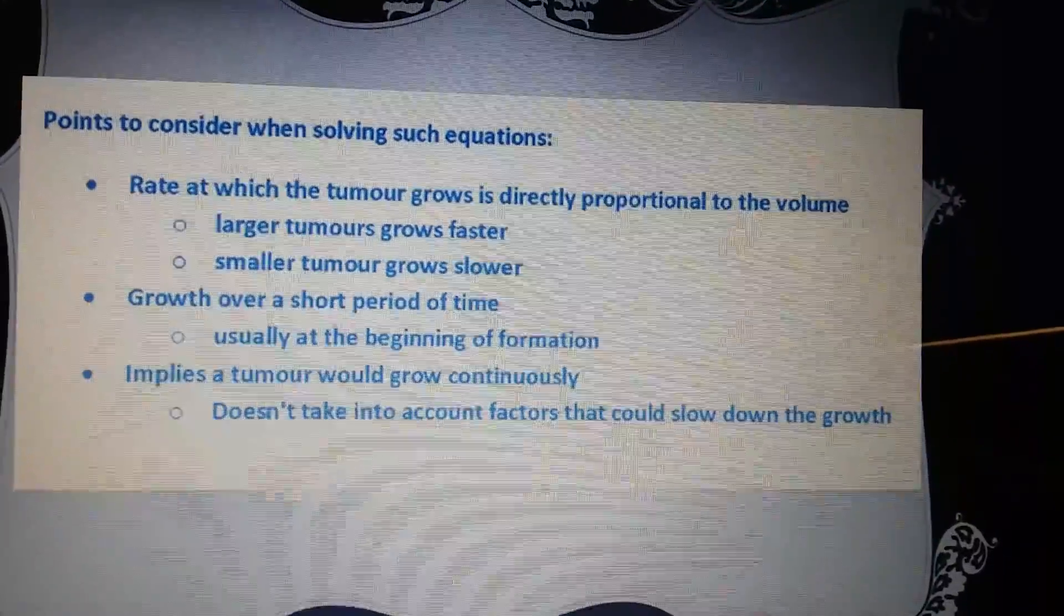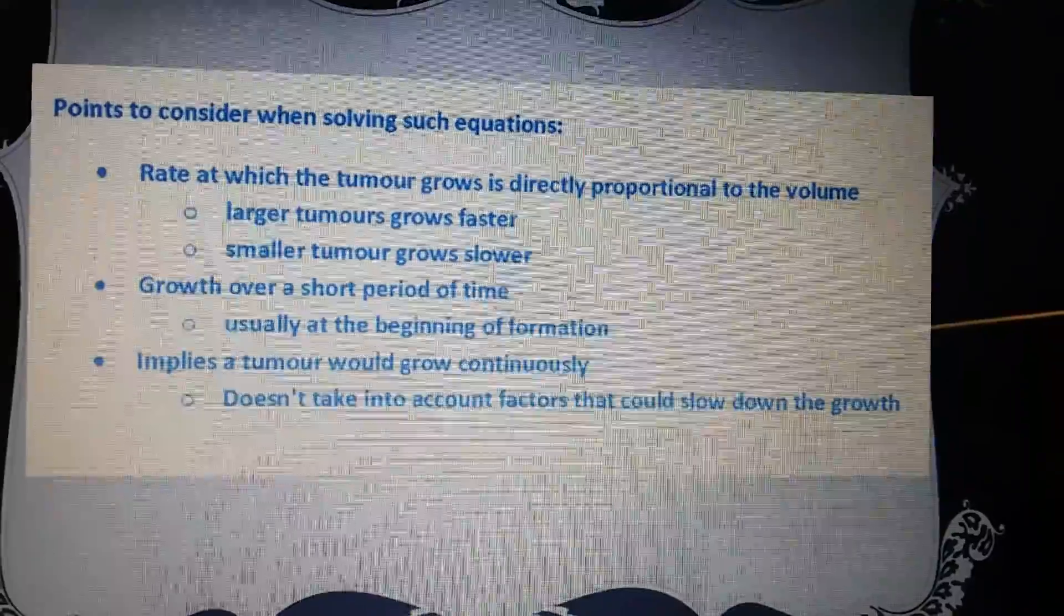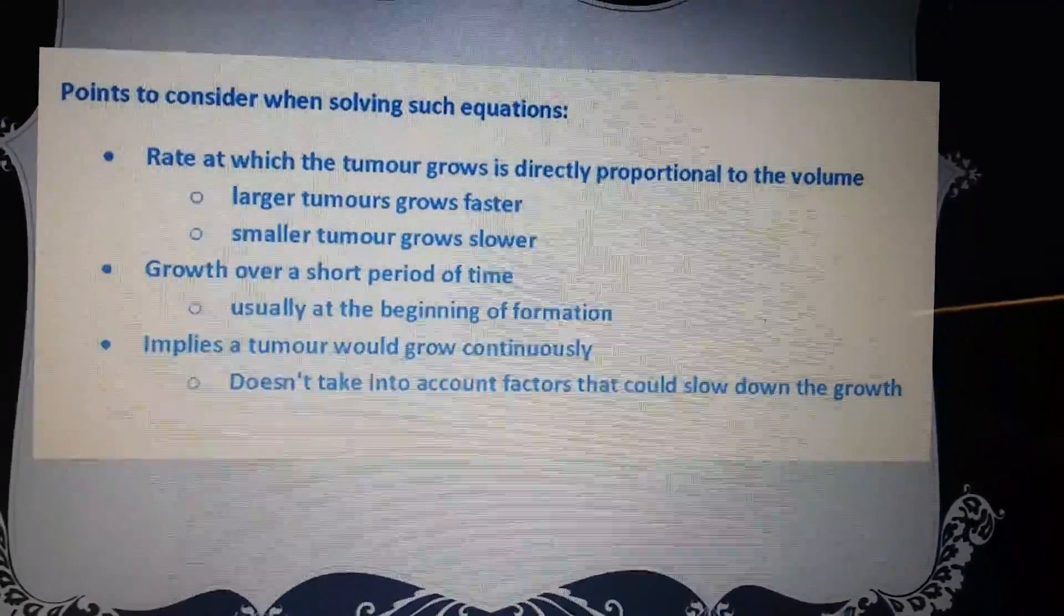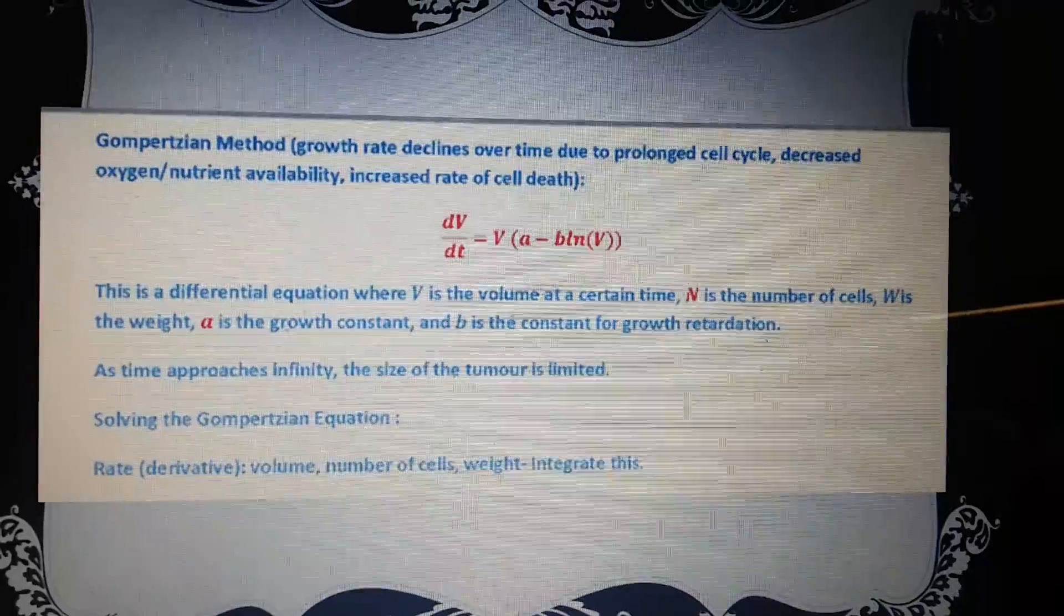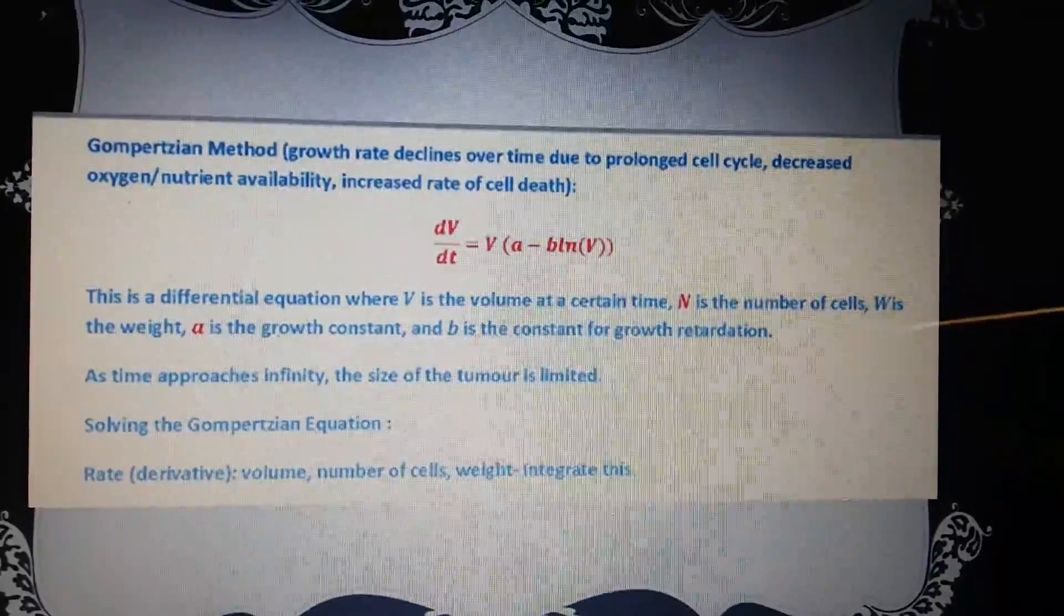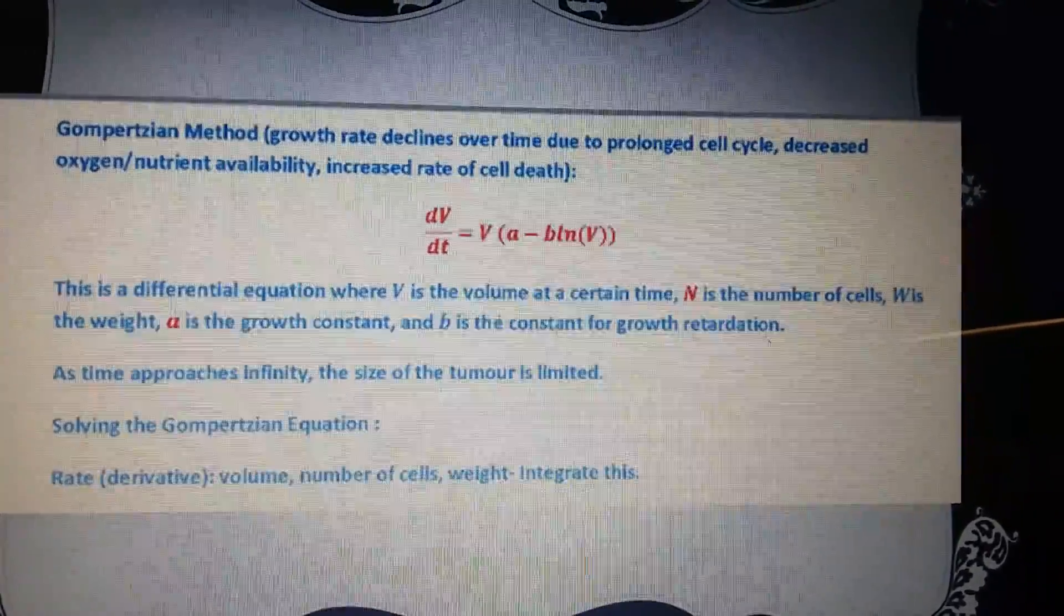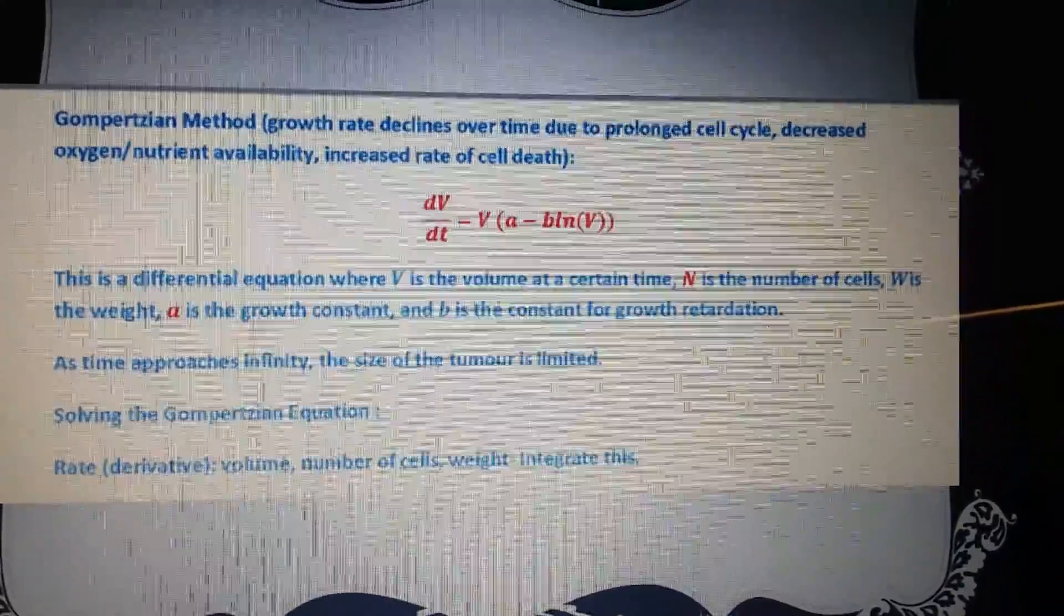Points to consider when solving each equation. Rate at which a tumor grows is directly proportional to the volume. Growth over a short period of time implies the tumor will grow continuously. Important facts. Again, this is the equation that we use. A is the growth constant and B is the constant for growth retardation.